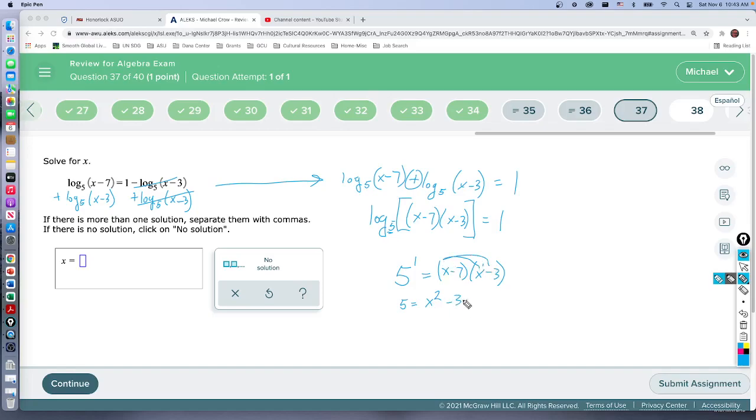So x times x gives us x squared, right? And then we do x times minus 3, minus 3x, minus 7 times x, and then minus 7 times minus 3 gives us plus 21. Combine like terms, x squared, we get negative 10x plus 21.